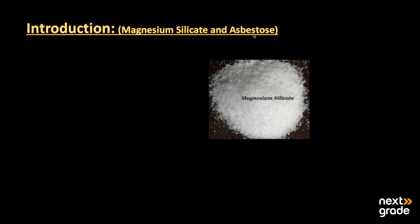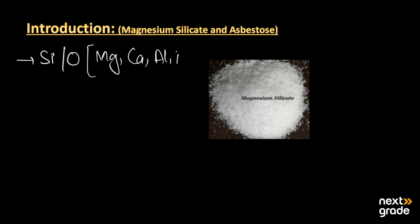Today we are going to discuss magnesium silicate and asbestos. These are mainly compounds of silicon. When silicon reacts with oxygen along with metals like magnesium, calcium, aluminium, and sodium, it makes compounds that are mainly known as silicates.